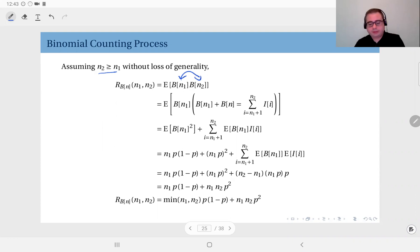Anyway, okay, so this is the expected value of b of n1 times b of n2. So assuming n2 is greater than or equal to n1, b of n1 has the sum of iid Bernoulli trials